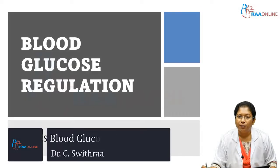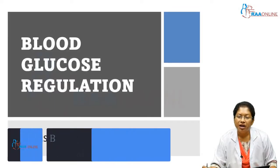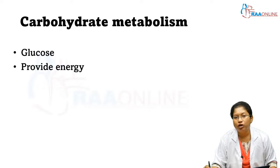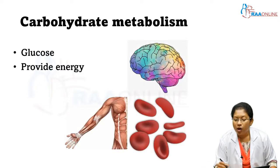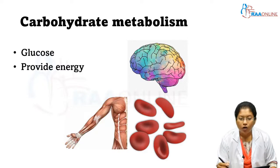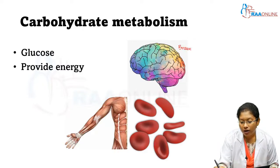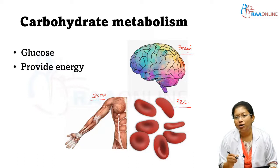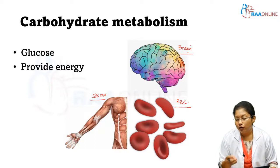This session is about blood glucose regulation. The glucose in our body is to be maintained within a normal range, that is between 70 to 110 milligrams per deciliter. We need carbohydrate metabolism for two things: one, to maintain the blood glucose value, and second, to provide energy, that is ATP. Organs such as the brain, RBC, and skeletal muscles solely depend on glucose for their metabolism, and when glucose is metabolized in these cells, they produce ATP for energy.